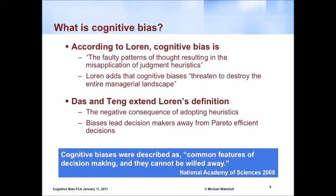So what's cognitive bias? This is from a researcher named Loren. Cognitive bias is faulty patterns of thought resulting in misapplication of judgment heuristics. What is heuristics? Heuristics is a rule of thumb — really a rule of thumb. It's a way of perceiving things; it's kind of the way you've always done it.